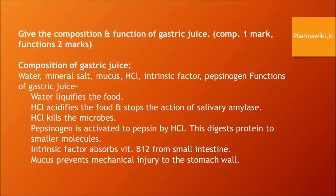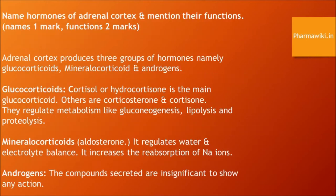Hormones of the adrenal cortex and their functions. The adrenal cortex produces three groups of hormones: glucocorticoids, mineralocorticoids, and androgens. Glucocorticoids, also called cortisol, is the main glucocorticoid; others are corticosterone and cortisone. They regulate metabolism including gluconeogenesis, lipolysis, and proteolysis. Mineralocorticoids like aldosterone regulate water and electrolyte balance and increase the reabsorption of sodium ions. Androgens secreted are insignificant to show any action.